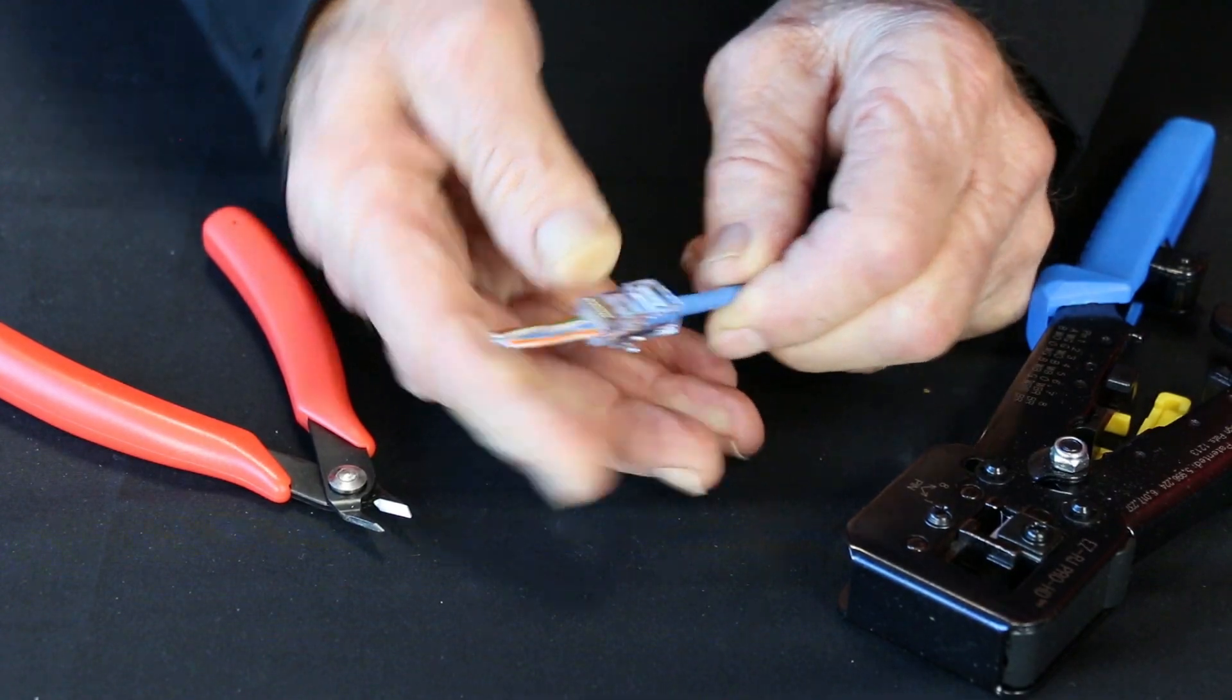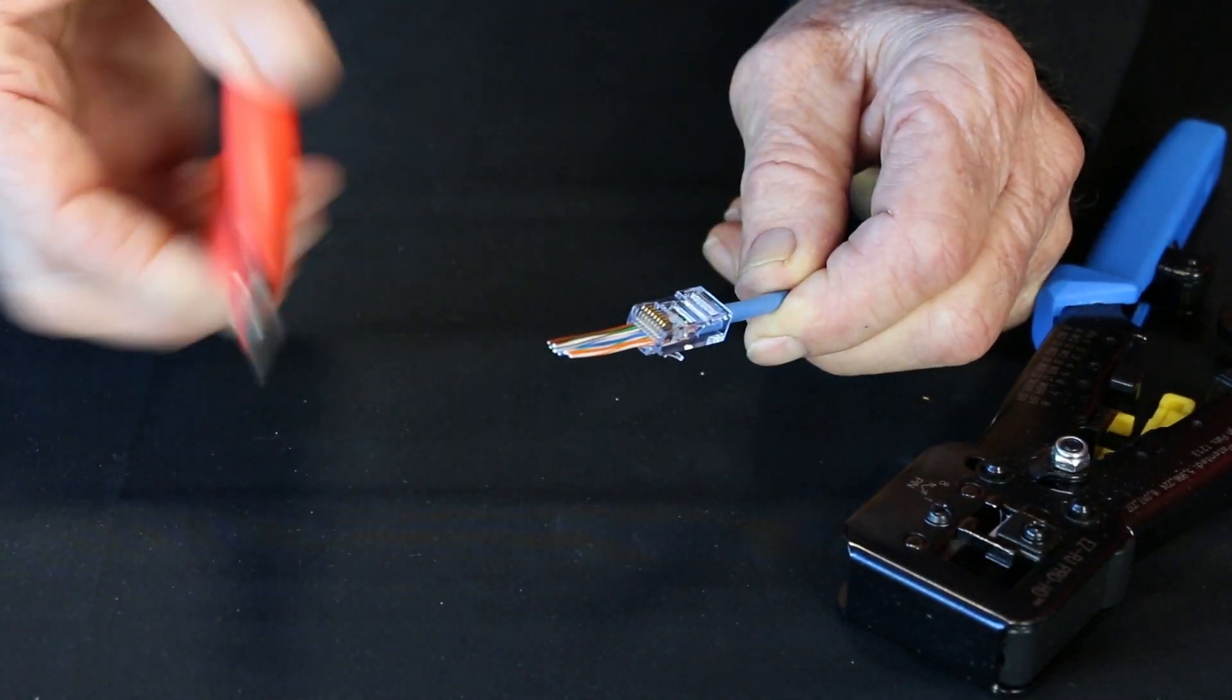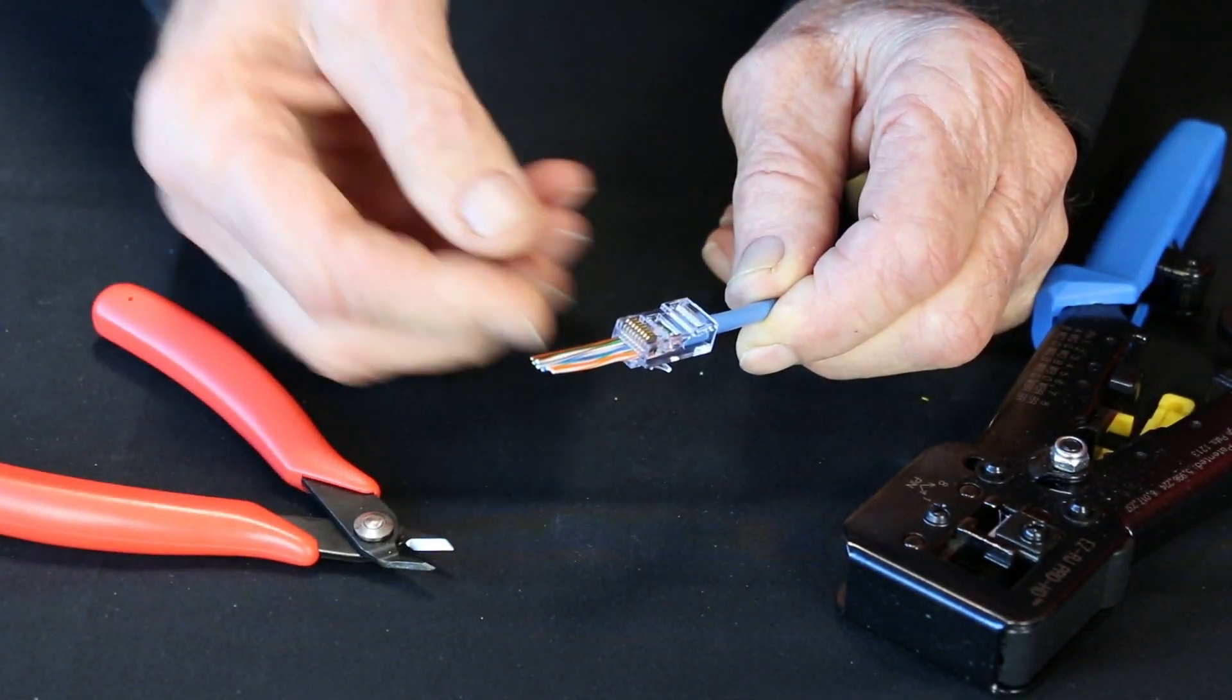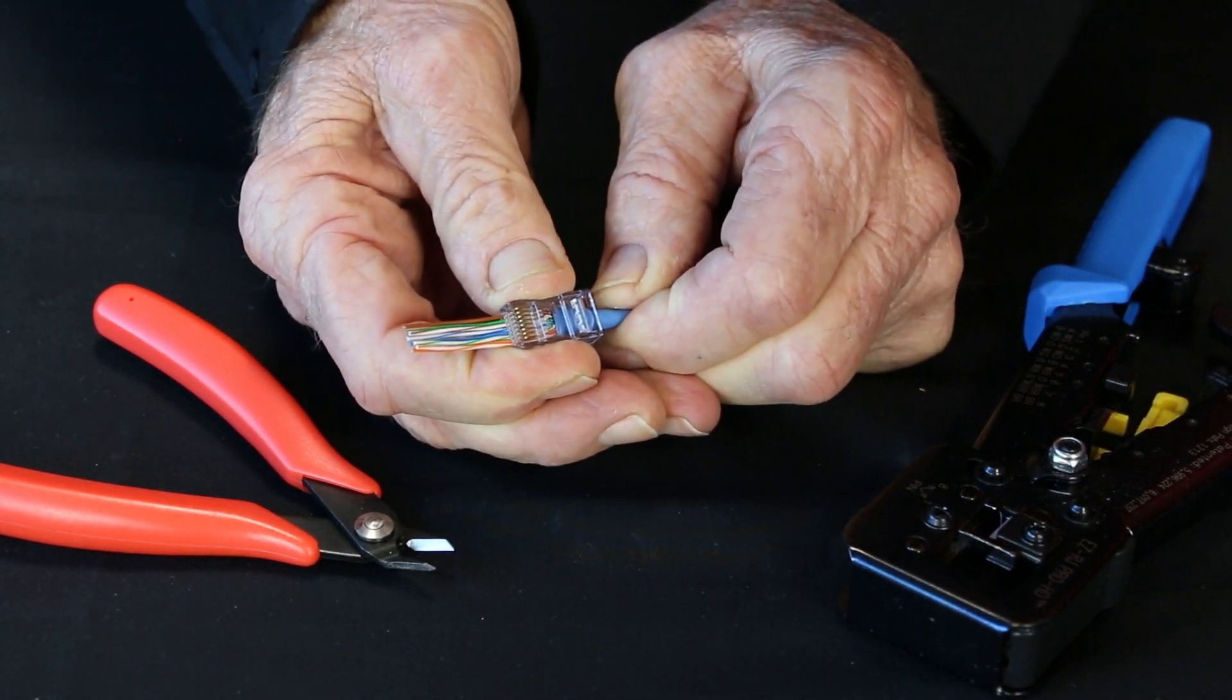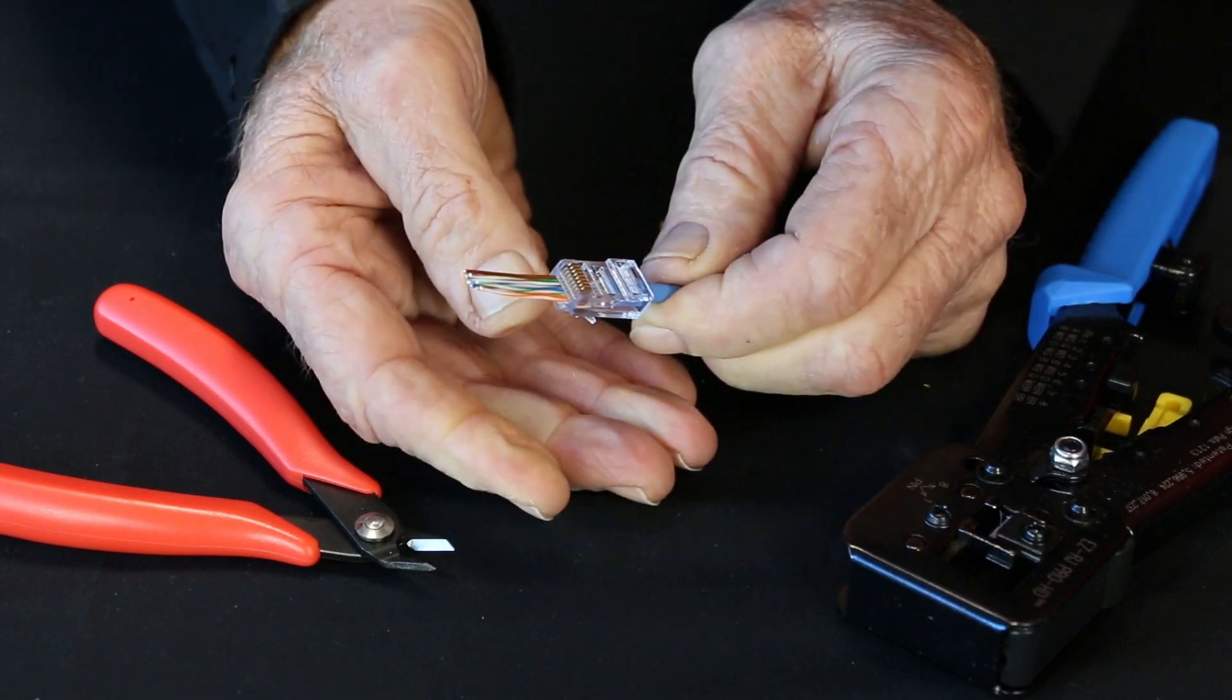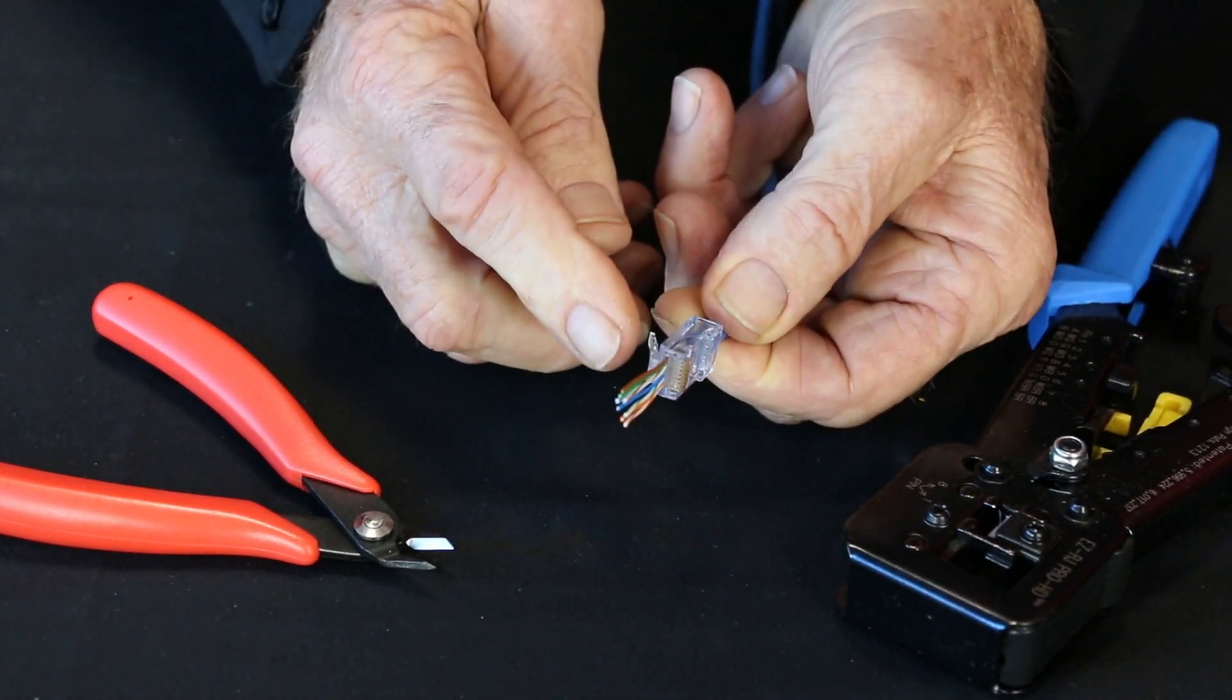Okay, before we cut these extended conductors off using my flush cutter, let's make sure that your cable is all the way up in there, because we want it tight up in there, ready to go. Now I'm going to cut as flush as I can.